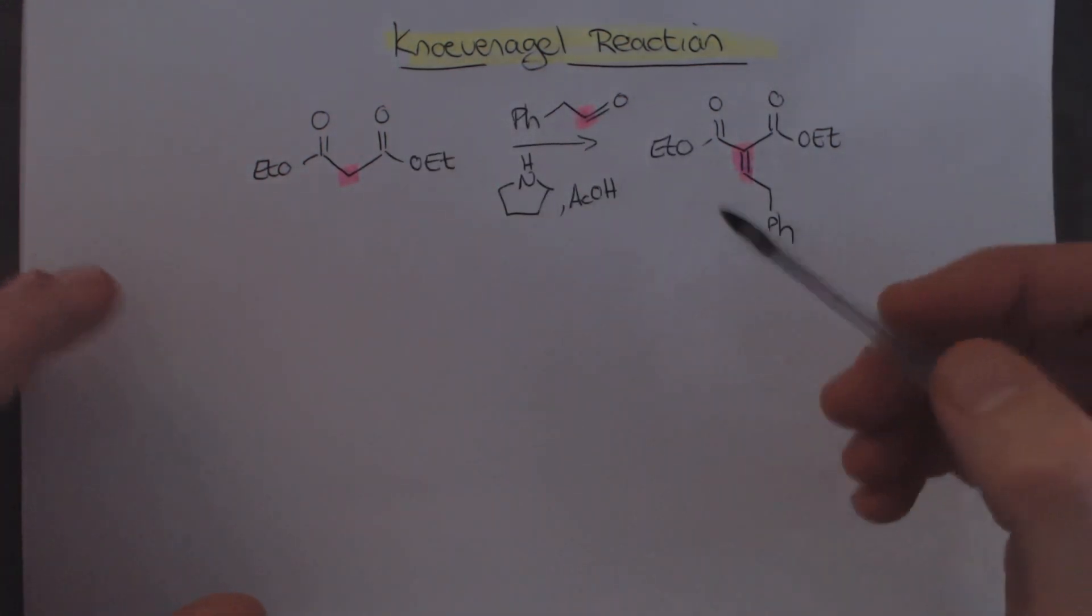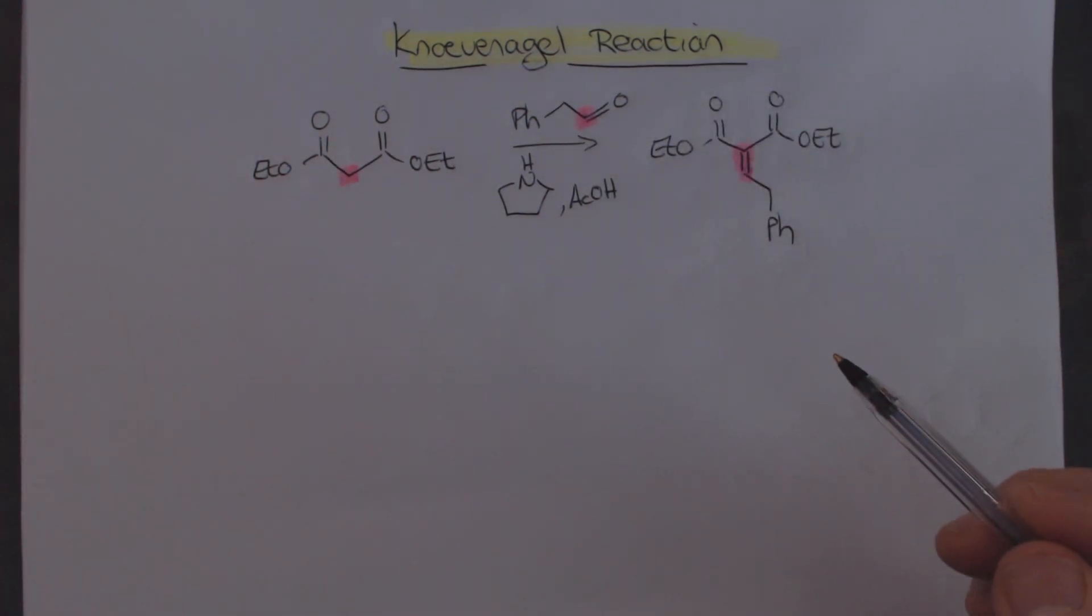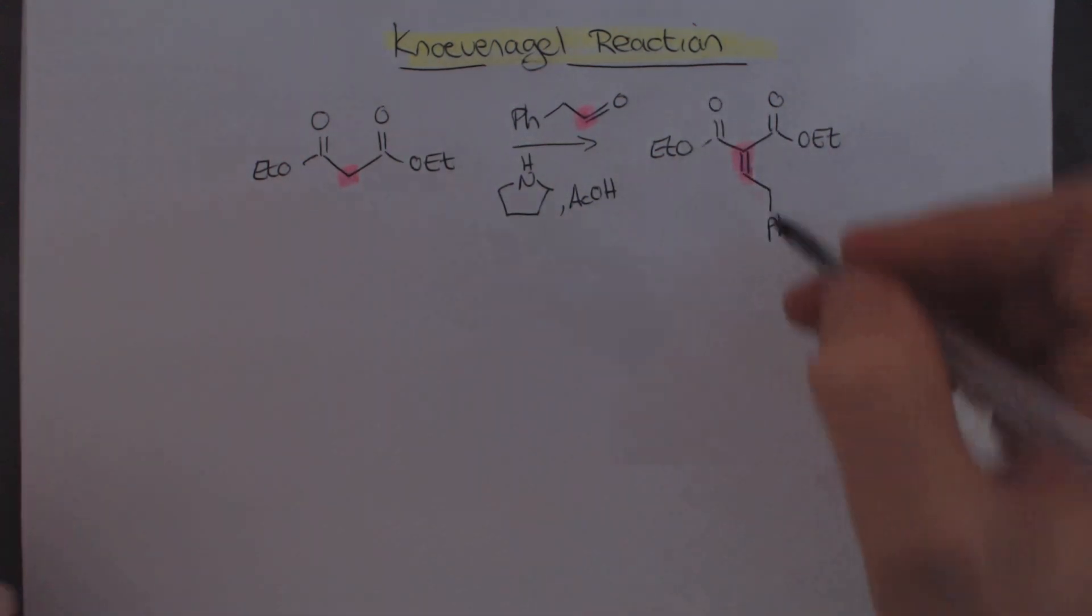Of course, one of the things we can do and what we've learned is that you can also probably do a decarboxylation of this, remove this one over here, and so that you could just get the acid, the alkene acid, conjugated acid.